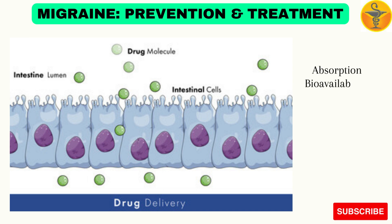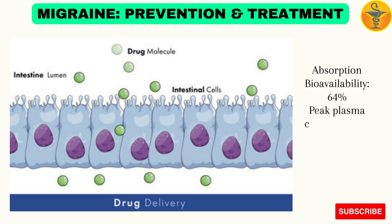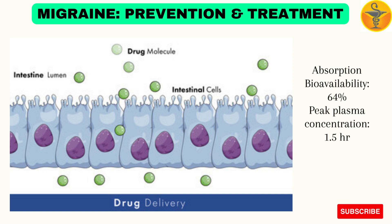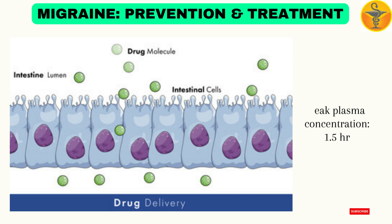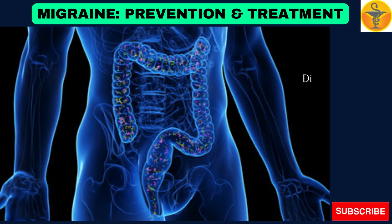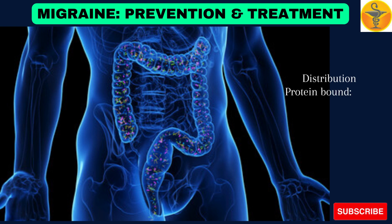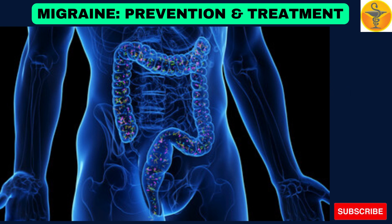Absorption — Bioavailability: 64%. Peak plasma concentration: 1.5 hours. Distribution — Protein-bound: 96%. Volume of distribution (VD): 120 L.